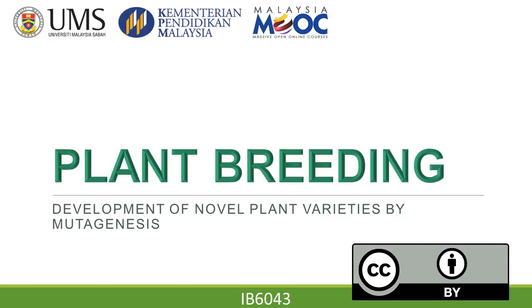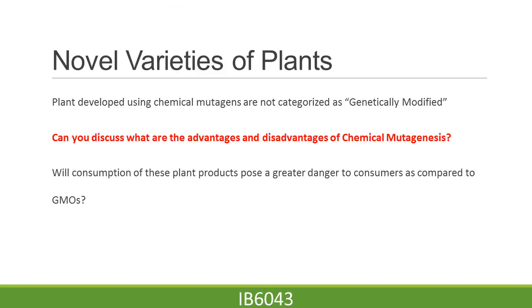Today's lecture will focus on plant breeding, and a specific aspect which is the development of novel plant varieties by mutagenesis. One of the major aspects of plant breeding using chemical mutagenesis is that plants developed using chemical mutagenesis are not categorized as genetically modified.